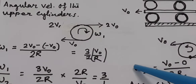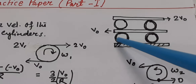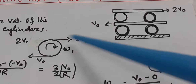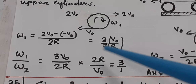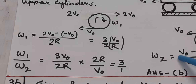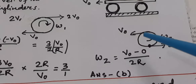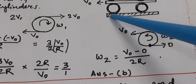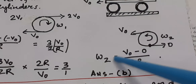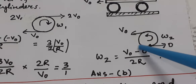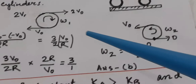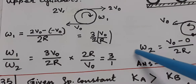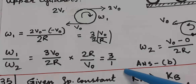If we take the lower cylinder, the lower plate is fixed and the middle plate is going. It will have angular velocity ω2. That is V0 minus 0 divided by again distance twice R, so it will give ω2 = V0/(2R). Now we have to find out ω1/ω2. ω1 is known, ω2 is known, this ratio is 3 is to 1.